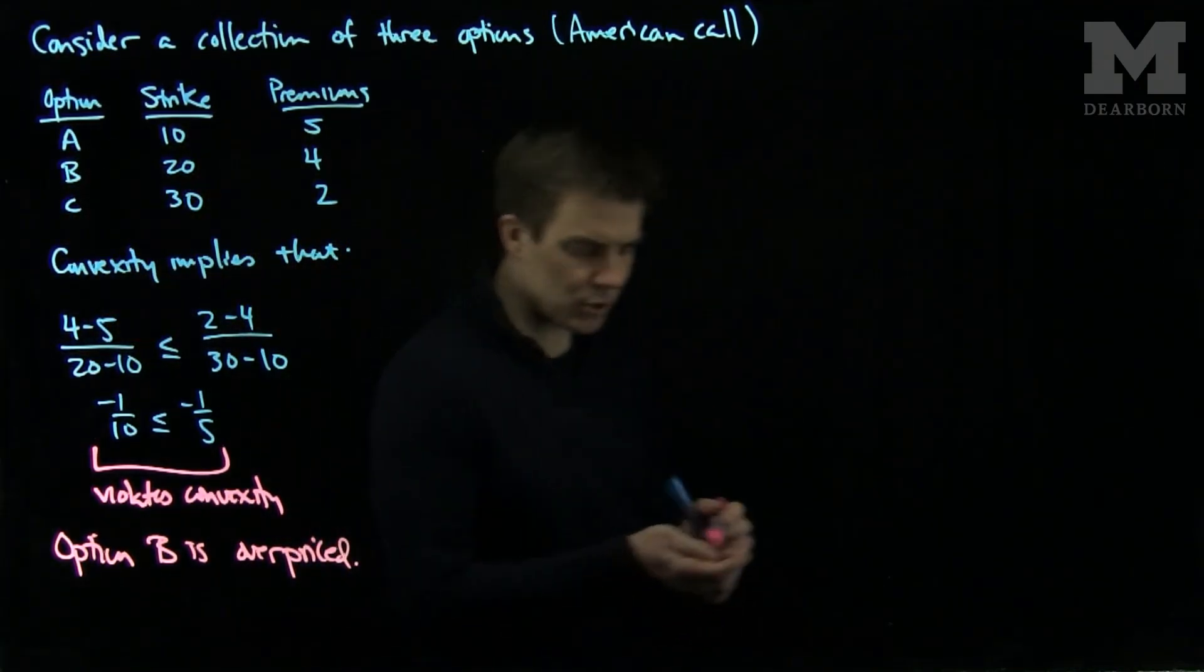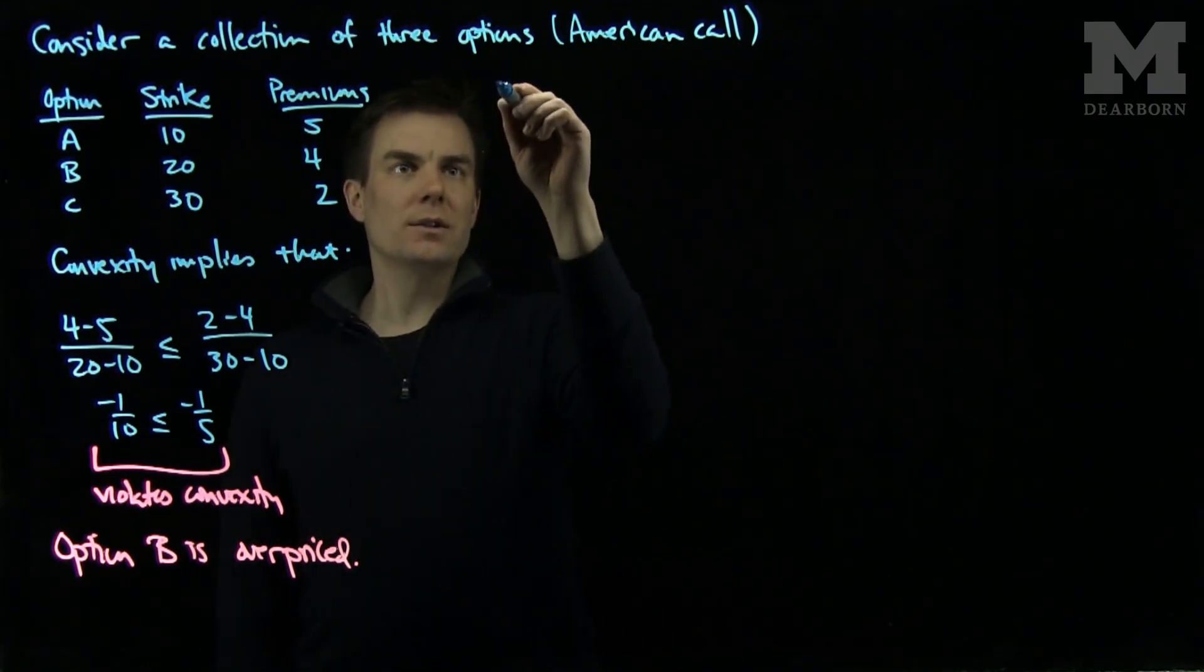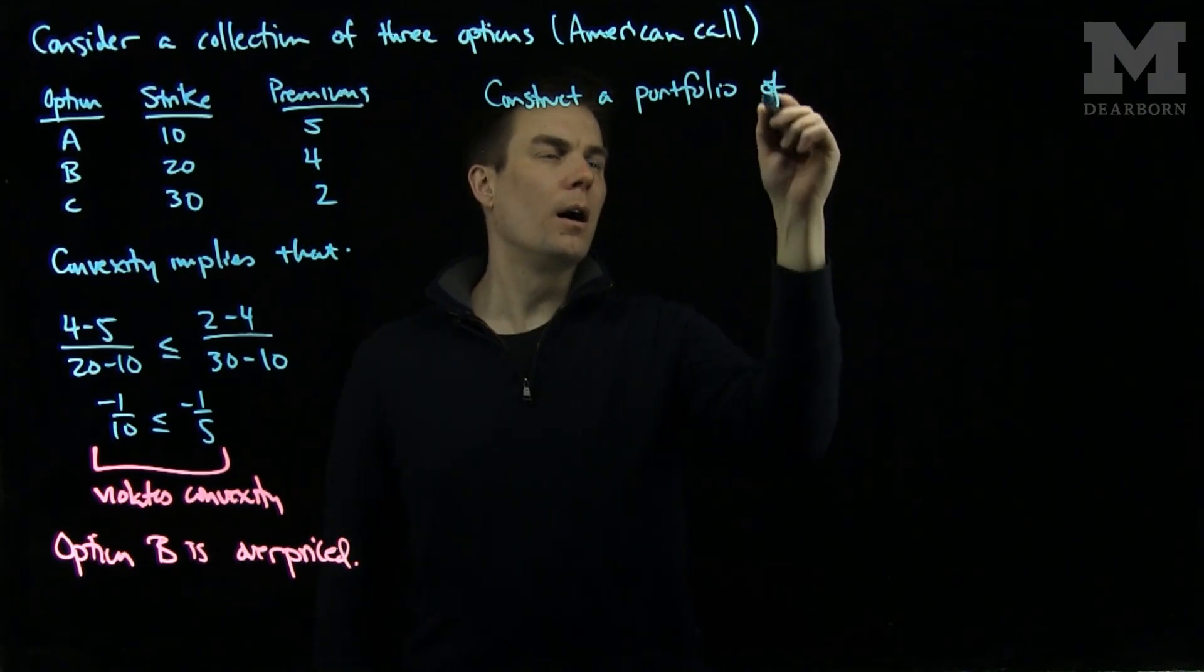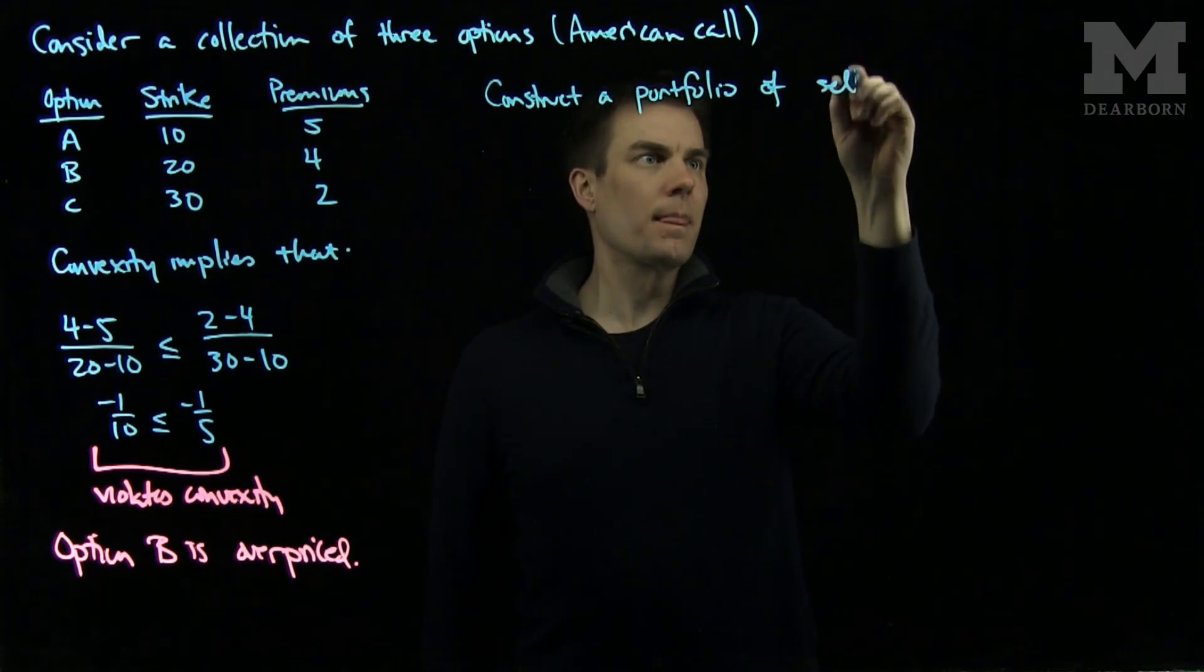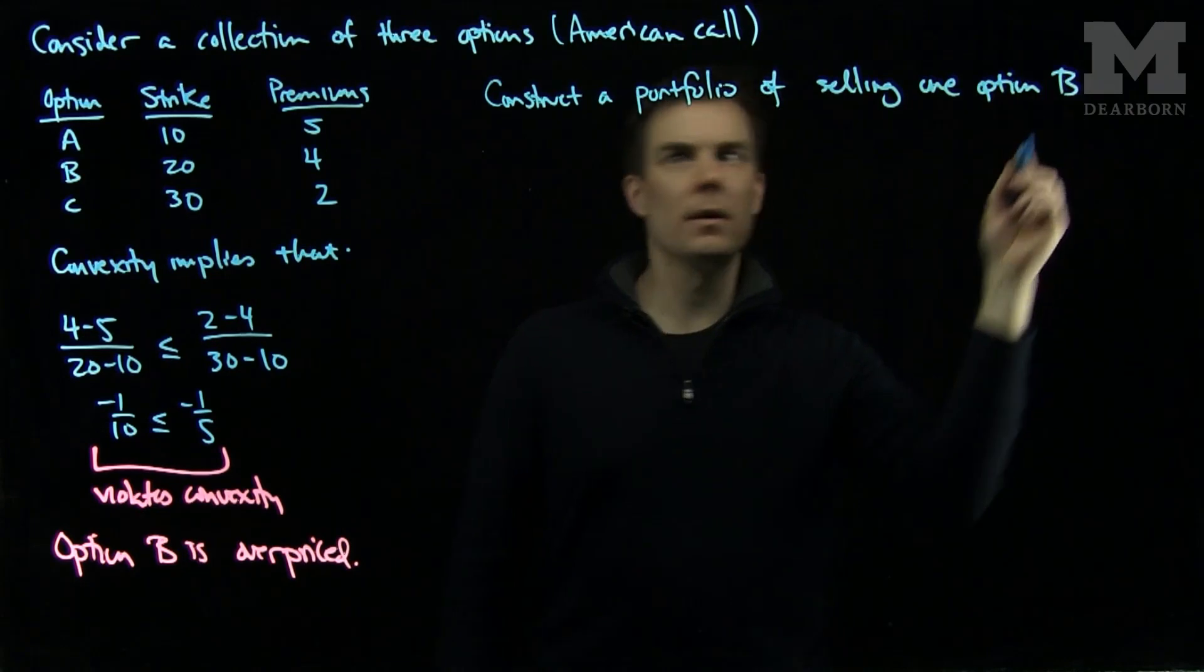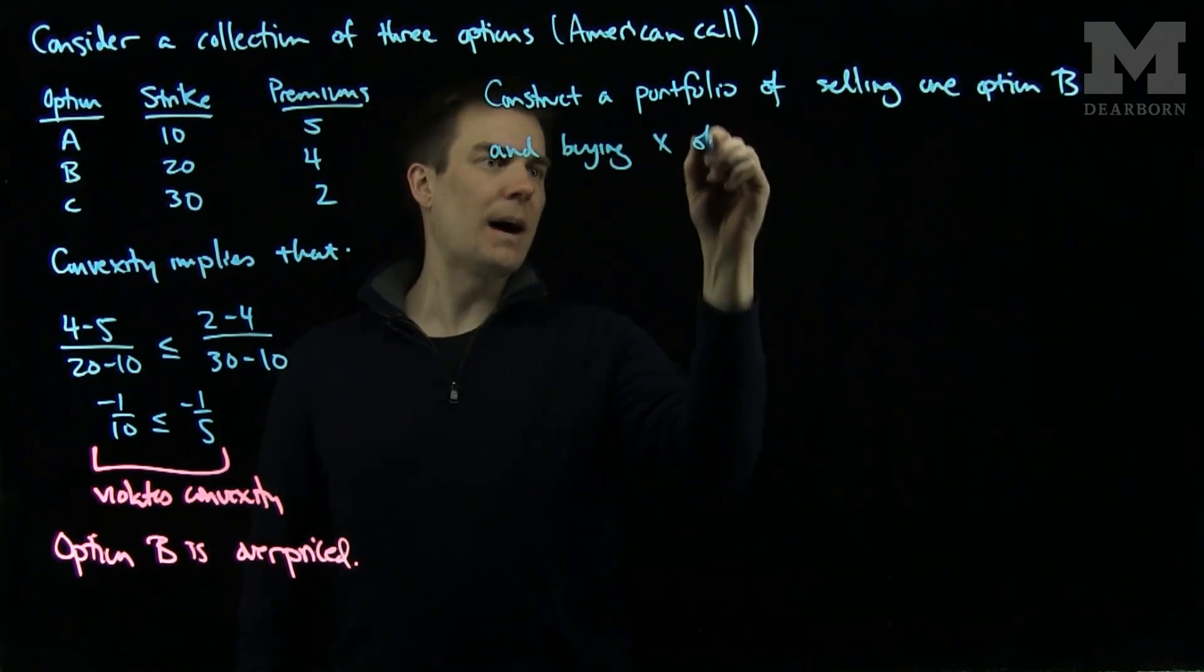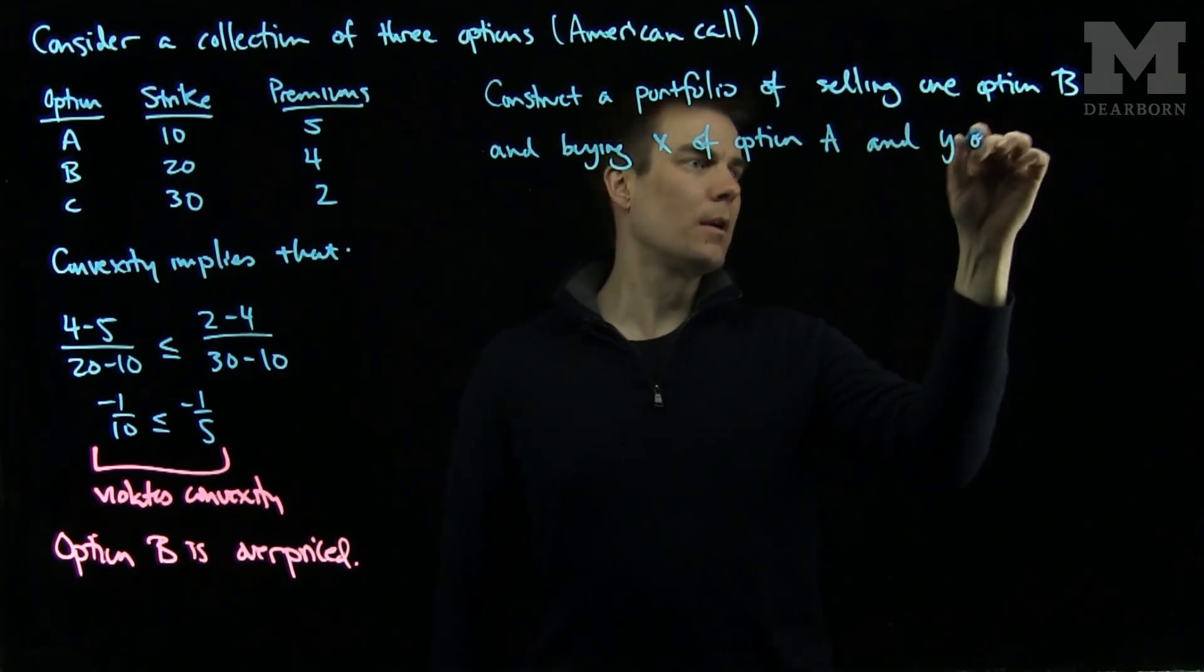So since option B is overpriced, we can find an arbitrage by the following. Let's construct a portfolio of selling one option B and purchasing x of option A and y of option C.